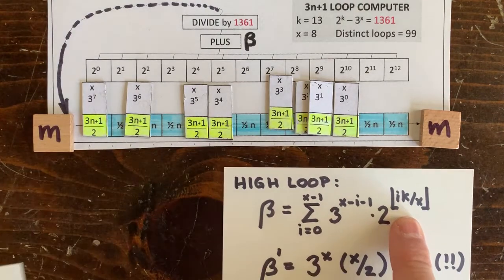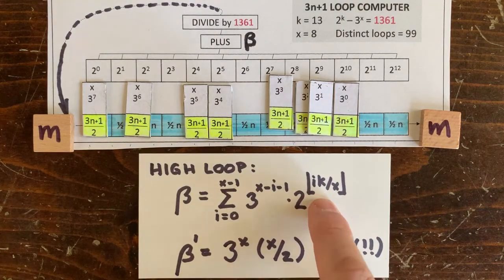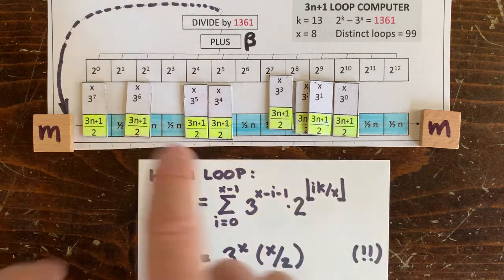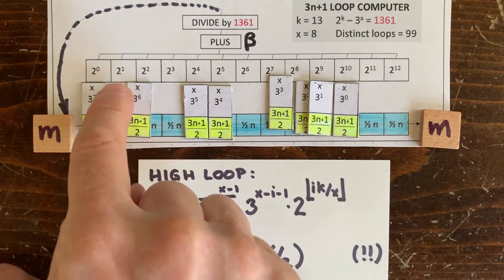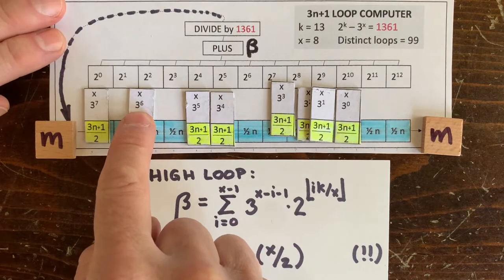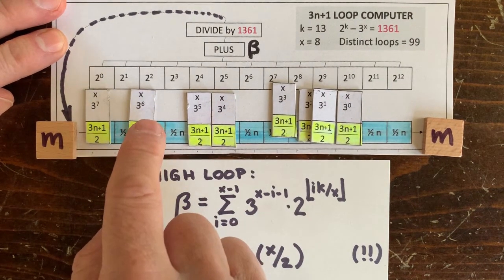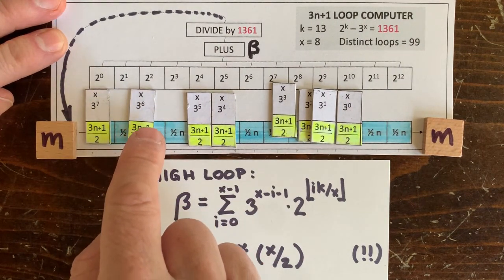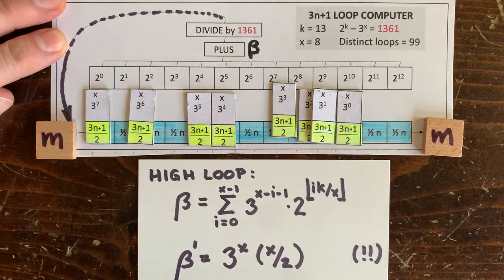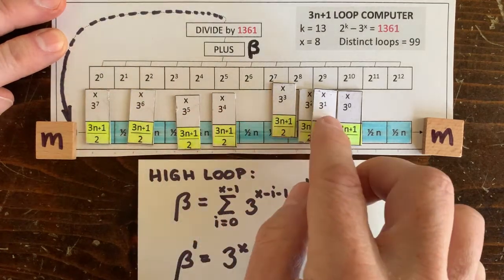How about we compute a beta directly on these straddled positions, like 3 to the 6 times 2 to the 1.6, and add all those up? We can call that beta prime. And that's actually an upper bound on beta for the high loop. Beta can't be bigger than that.